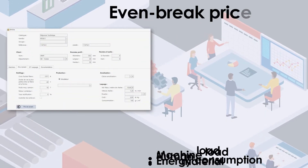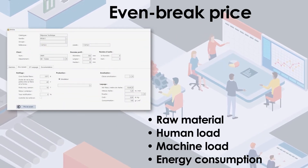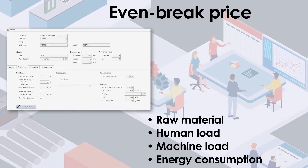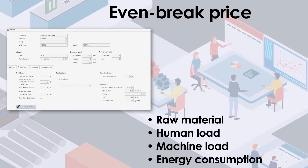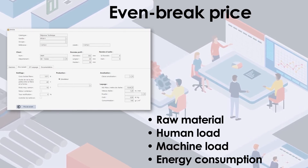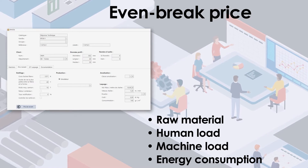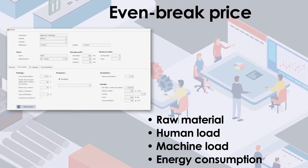KM Extrusion offers a module for calculating the cost price via an intelligent algorithm, depending on the price of raw materials, the machine and human load, as well as energy consumption. This will help identify the best break-even price of your products.